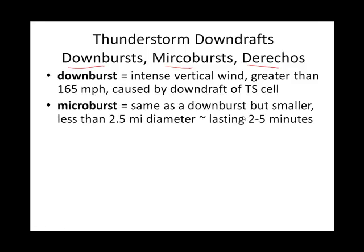Downbursts and microbursts are very similar — they're just different in size. What they both do is basically produce an intense vertical wind, just downward. Sometimes you'll hear weather folks talk about something called straight-line winds, and this is an example of a straight-line wind. Once it hits the ground, if it's a downdraft, it's going to go both ways — remember, like gust fronts go both ways.